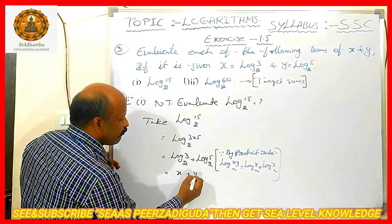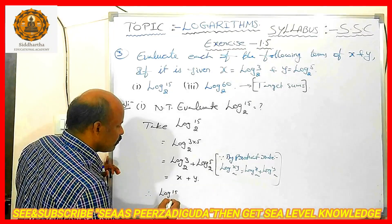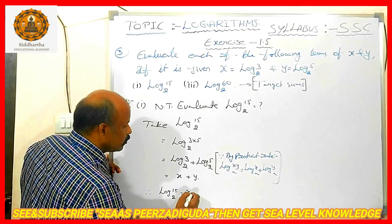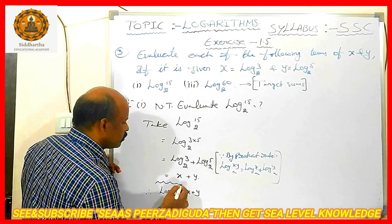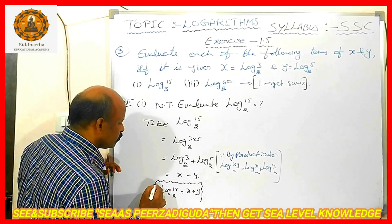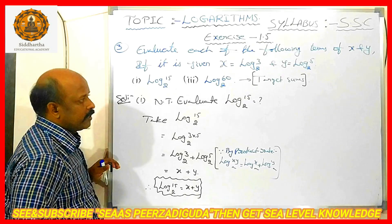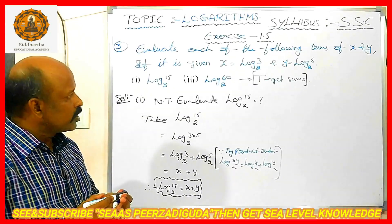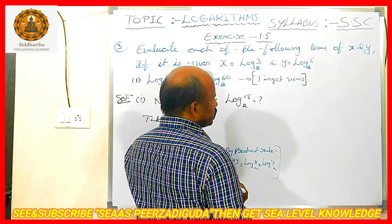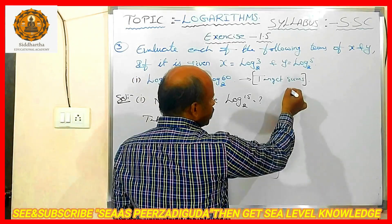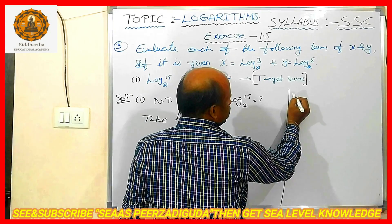So the result is x plus y. Therefore, log 15 base 2 is equal to x plus y. Log 15 base 2 in terms of x and y is x plus y. Now, what is question number 3 over here? Log 60 base 2. Once you observe, I am going to do here. Third one.